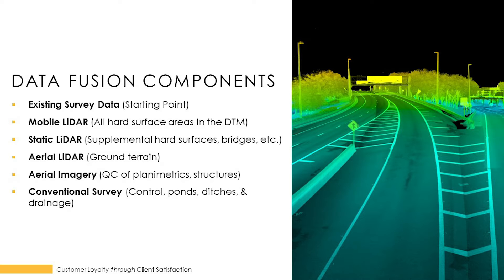The components of Data Fusion we'll be talking about today include all the tools in our geospatial toolbox. Depending on the project — and we're looking mainly at transportation — this could be many different sources of information: existing survey data, previously collected information for applications like design-build projects, mobile LiDAR which we typically use on hard surfaces and roadway corridors, static LiDAR which is your traditional laser scanning on a tripod-mounted system for bridges or infill of mobile LiDAR, and aerial LiDAR.